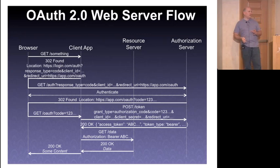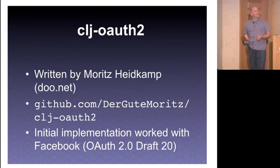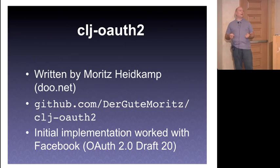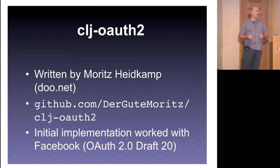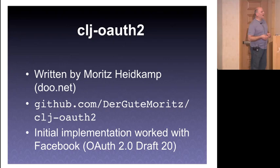There's quite a lot going on there. When I originally did this work, I coded all of this up in Clojure myself. But as I was preparing for this session, I came across something called CLJ OAuth2. Being a good open source citizen, I saw that Moritz Heidkamp of Do.net had done more work than I had and actually had more of a clue about Clojure than I did — not a high bar to clear. His initial implementation worked with Facebook, which used a different draft of the OAuth2 spec, so I had a little bit of tweaking to do.